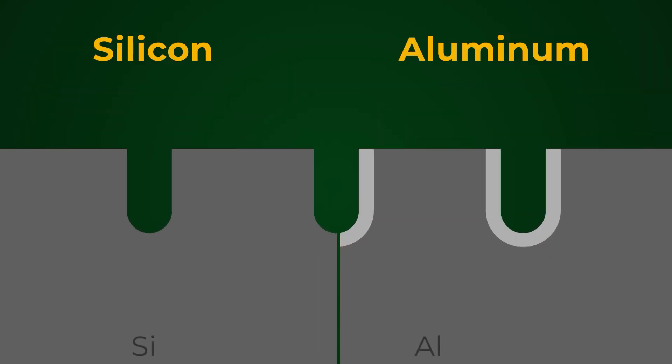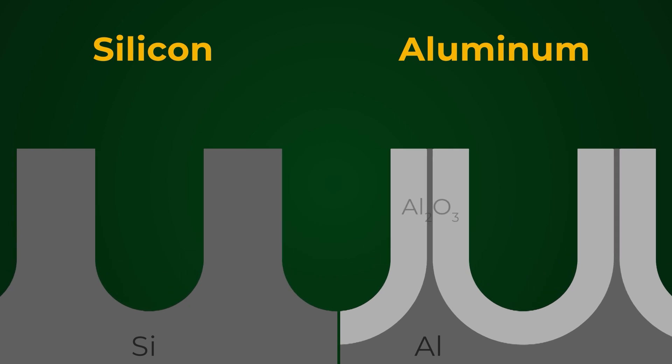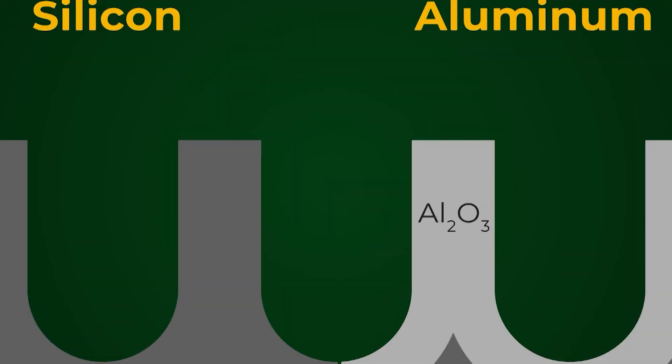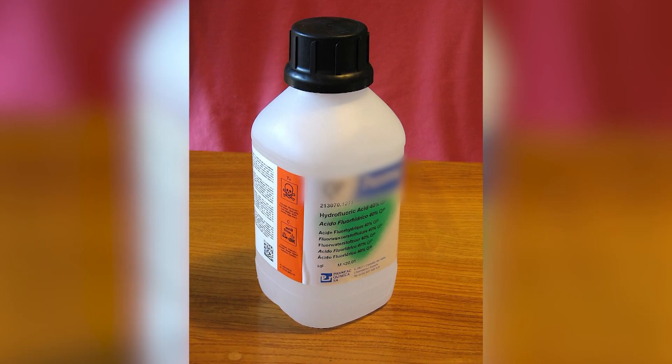Having already discussed aluminum, let's move on to silicon. The main difference between the pores that form in silicon and those that form in aluminum is that in this case no oxide is formed. The pores are etched directly into the silicon itself, which is a fundamental difference compared to aluminum, where a new chemical compound is created. Another key difference is that while with aluminum we can use different electrolytes, in the case of silicon the most commonly used electrolyte is hydrofluoric acid.